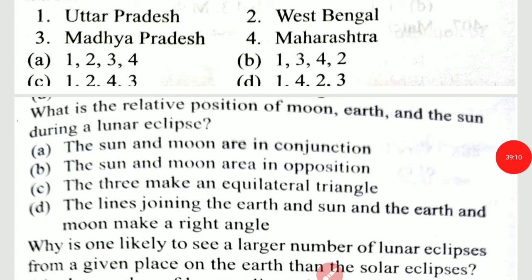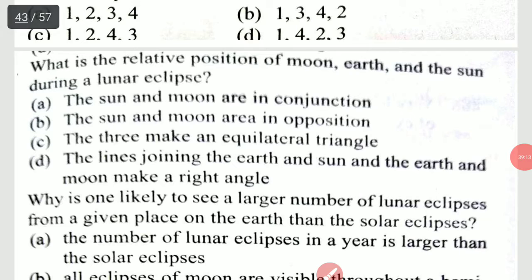What is the relative position of the moon, earth, and the sun during a lunar eclipse? It is option B: the sun and moon are in opposition.